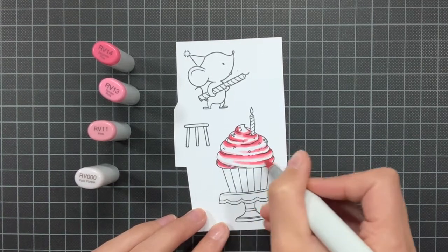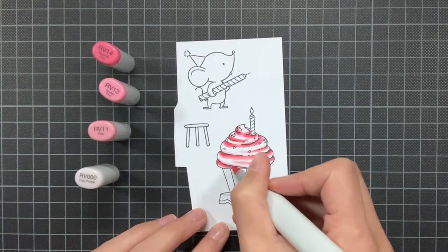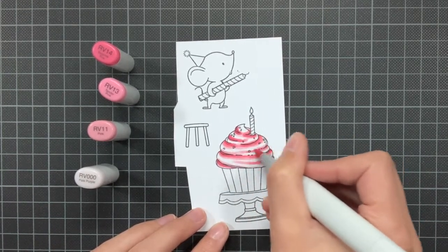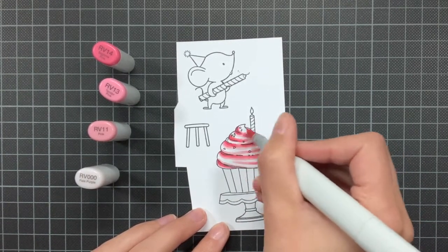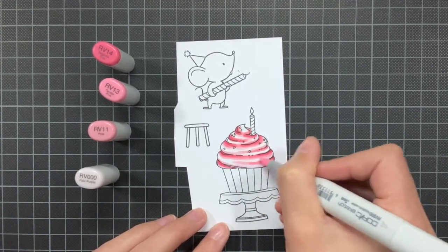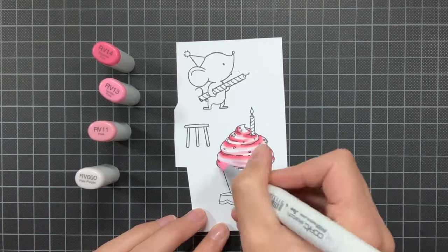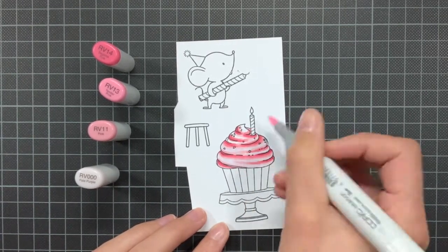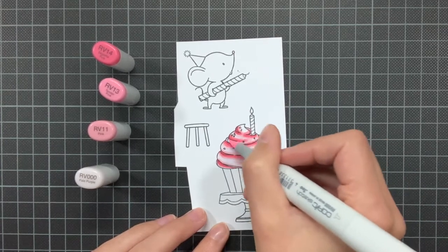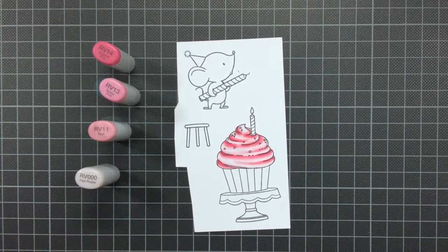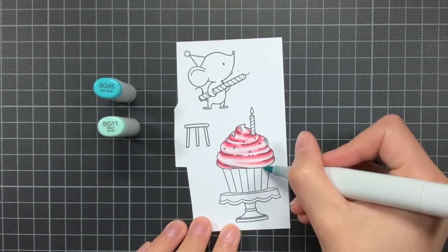To color in the cupcake I have used RV14, RV13, RV11 and RV000. When I do Copic coloring I always go from darkest to lightest. So I start with my darkest color and then work my way down to the lightest. And every time I go one color down, I first go over the previous color a bit, to make it blend well with the rest.